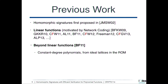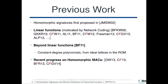For functions more expressive than linear ones, there is only one scheme — proposed by Boneh and Freeman at Eurocrypt 2011 — which supports constant-degree polynomials, works over ideal lattices, and is proven secure in the random oracle model. It's also worth mentioning recent progress on homomorphic MACs, the secret-key analog of this primitive. In that case, we know fully homomorphic constructions as well as more efficient somewhat homomorphic ones.